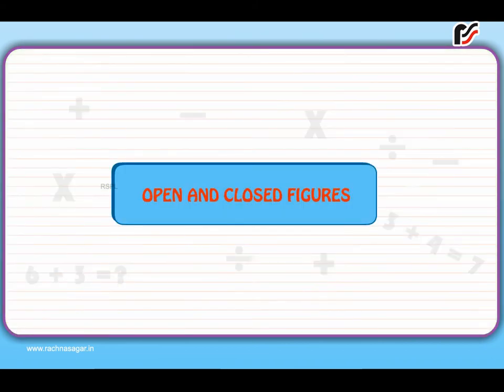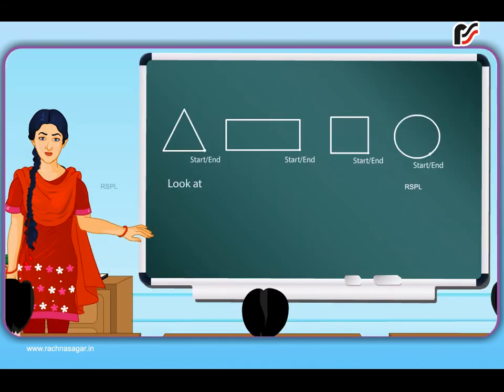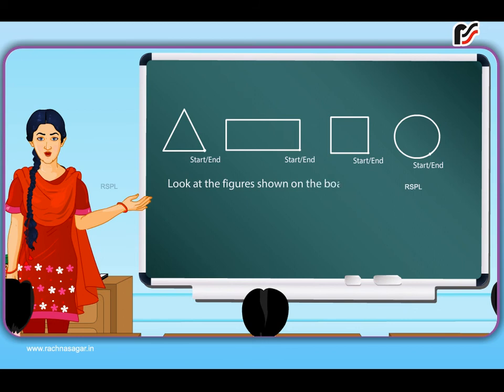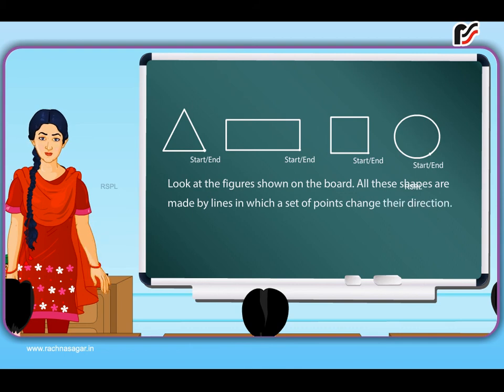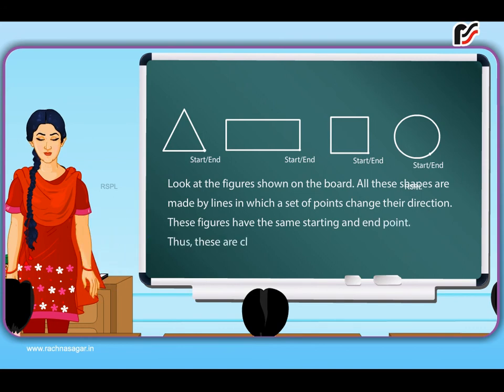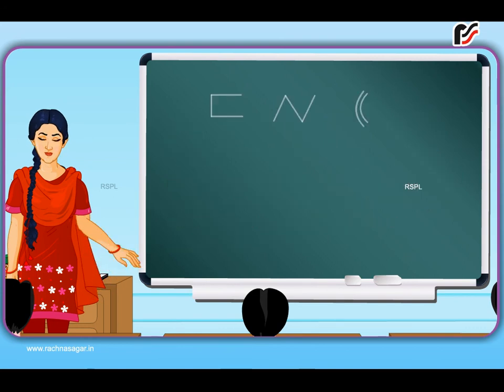Open and closed figures. Look at the figures shown on the board. All these shapes are made by lines in which a set of points change their direction. These figures have the same starting and end point. Thus, these are closed figures.